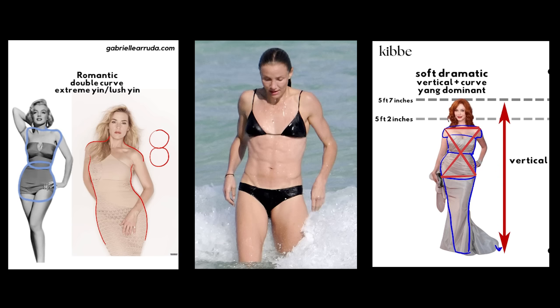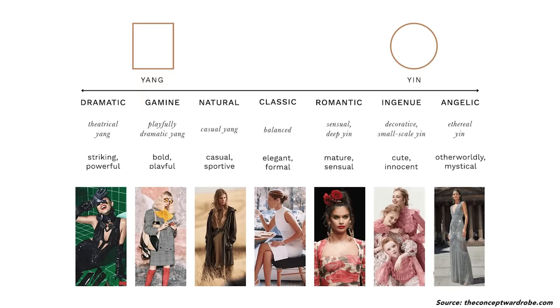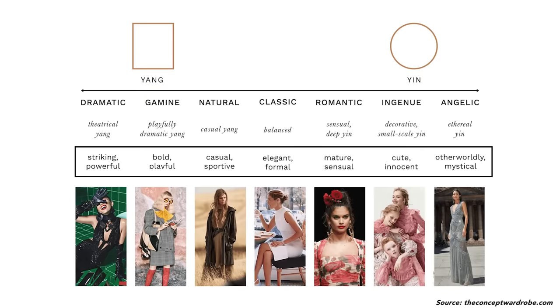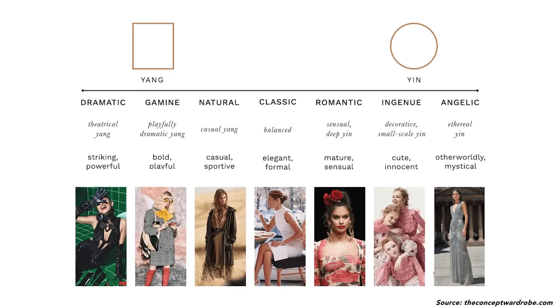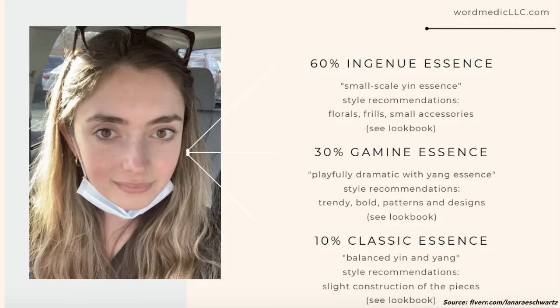Kitchener Essences — I honestly found Kitchener to be much more difficult for my type of brain to process. With Kibbe, concepts like width, curve, and vertical are specifically related to the lines of your body, whereas with Kitchener, a lot of the descriptions are based on feelings, so translating those feelings into some sort of more tangible logic was quite the challenge. And on top of that, you can also be a mix of essences, and more often than not, you are some sort of a mix than a pure type.